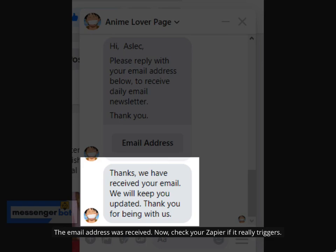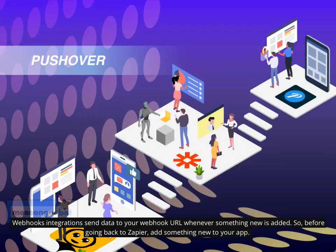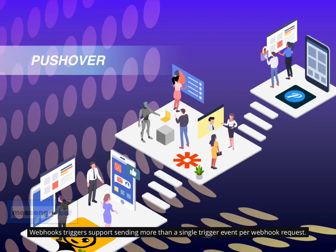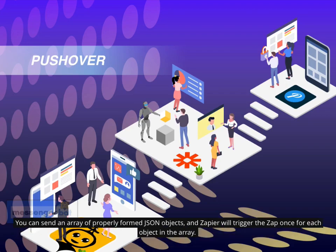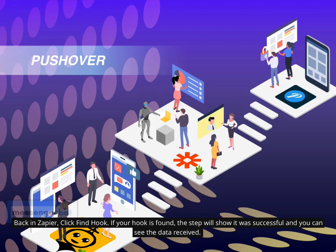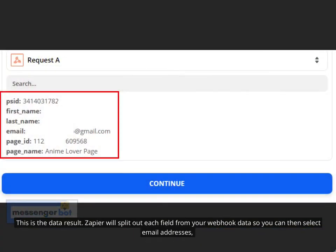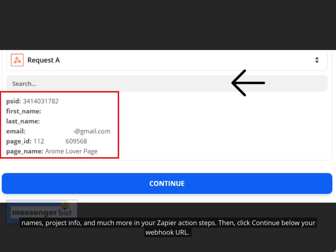Now check your Zapier to confirm it triggered. Webhook integrations send data to your webhook URL whenever something new is added, so before going back to Zapier, add something new to your app. You can send an array of properly formed JSON objects and Zapier will trigger the Zap once for each object. Back in Zapier, click Find Hook. If your hook is found, the step will show it was successful and you can see the data received. Zapier will split out each field from your webhook data so you can select email addresses, names, project info, and more in your Zapier action steps. Then click Continue.